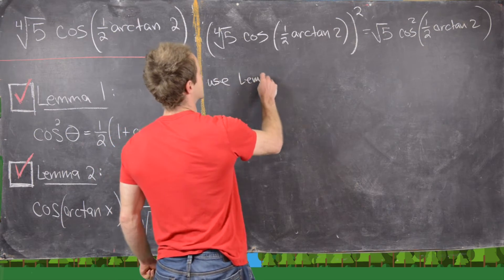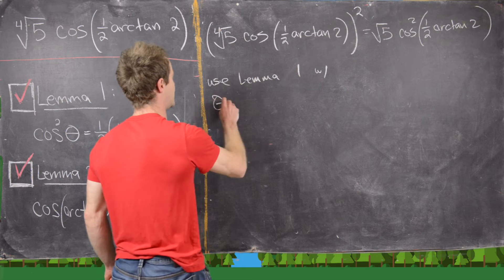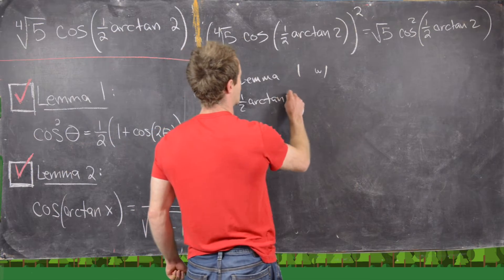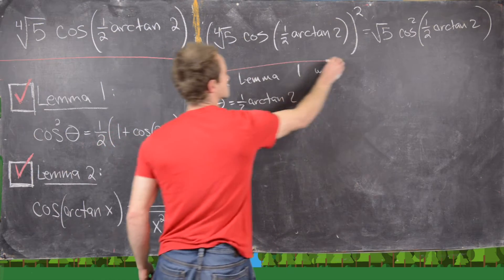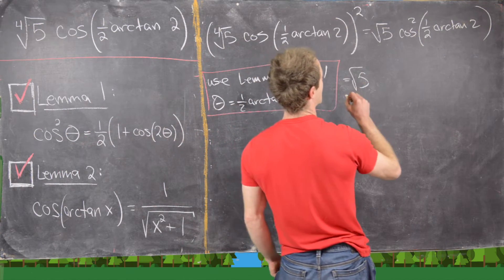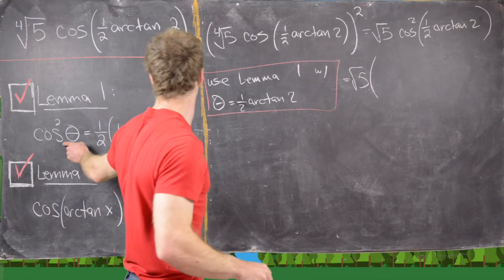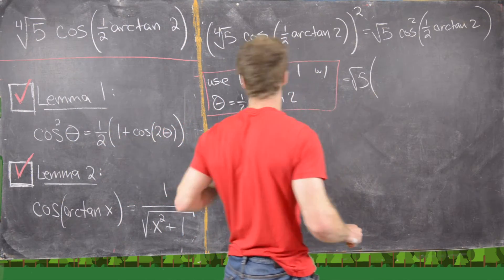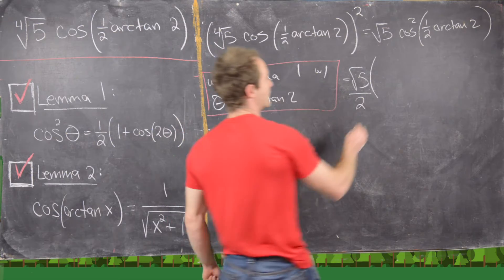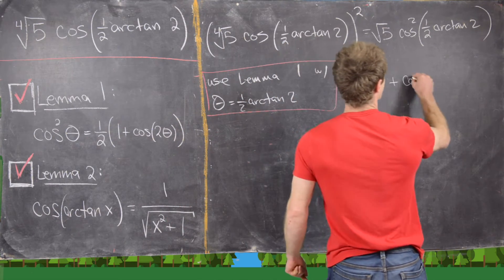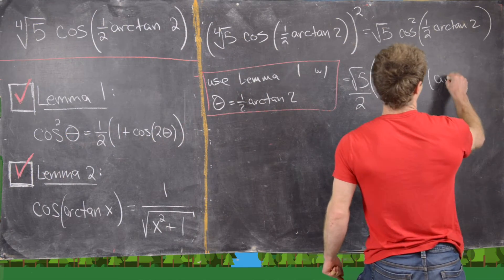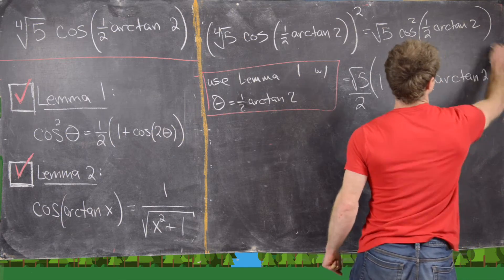We use Lemma 1 with θ equal to one-half arctan of two. That allows us to write this as the square root of five times one-half times (1 + cosine of 2θ). Substituting back, the two and the one-half cancel, leaving the square root of five over two times (1 + cosine of arctan of two) inside.